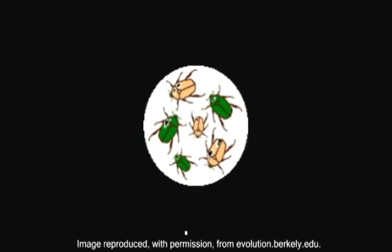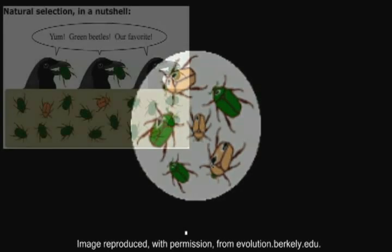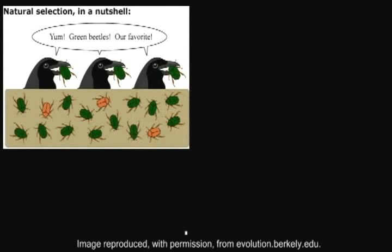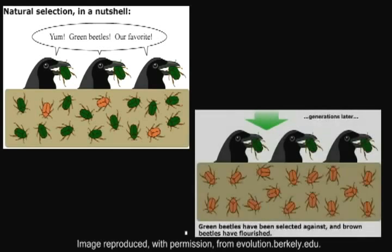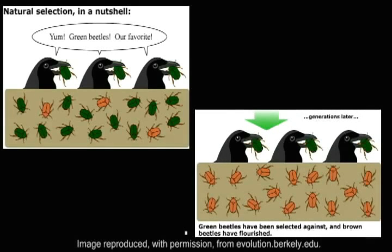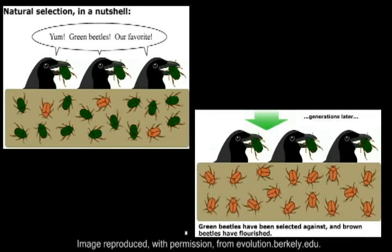Evolution can best be described as descent with modification. In a nutshell, what this means is that different individuals of the same species display different versions of a trait. Because in a given environment, some versions of a trait will make one more likely to survive and mate than others, the genetic composition of a population will change over time in response to its environment.